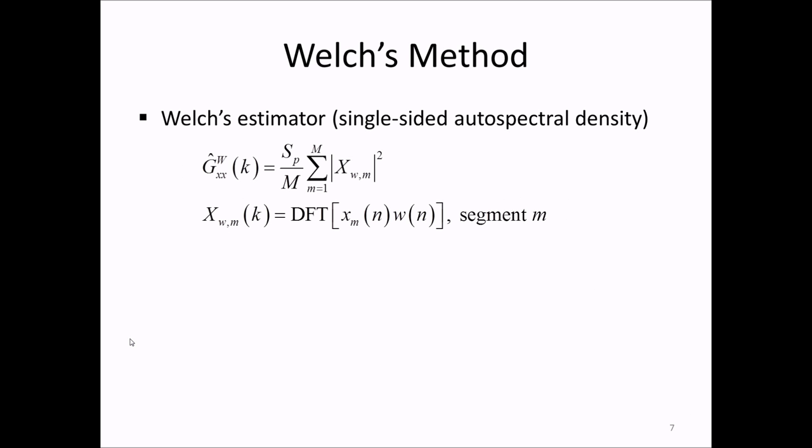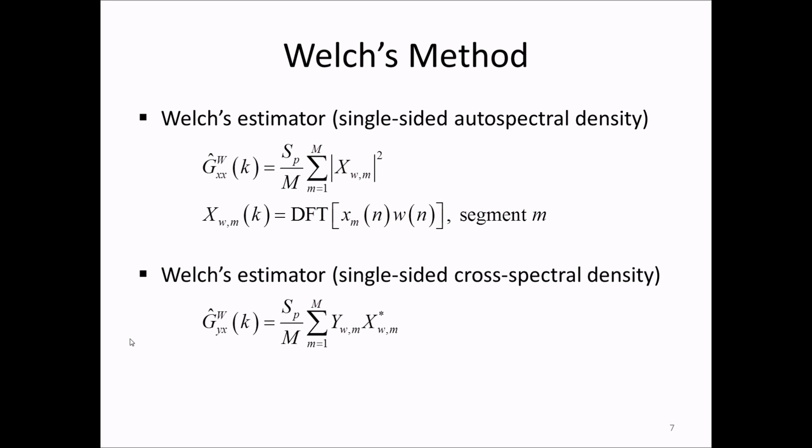The formula for the Welch estimate is that the single-sided Welch PSD estimate of the signal x of n that we denote g hat sub xx is a scaling factor uppercase S sub p times the average of the magnitude squared of the windowed DFT of x, which we denote x sub w of k and n. Similarly, for two signals x and y, the cross-spectral density is produced by averaging the DFT of y of n, the output signal, times the complex conjugate of the DFT of x, the input or reference signal.